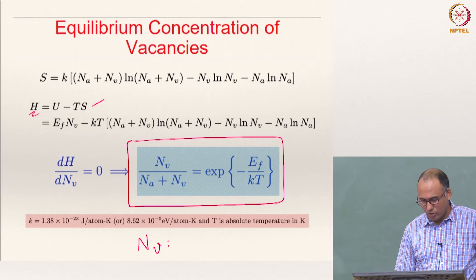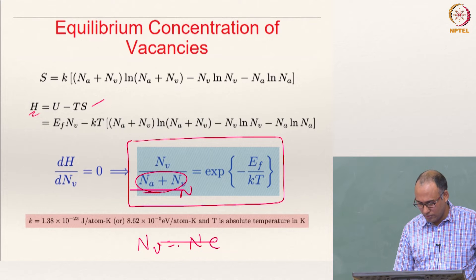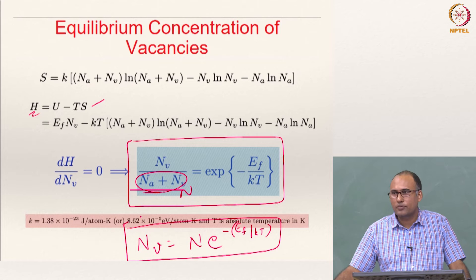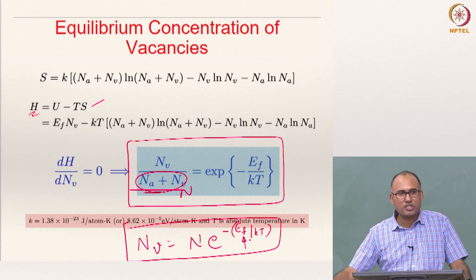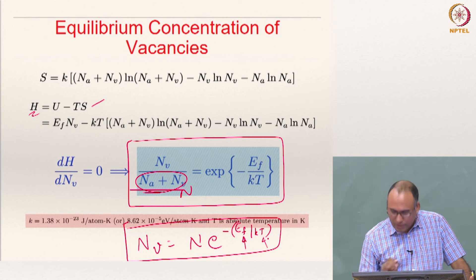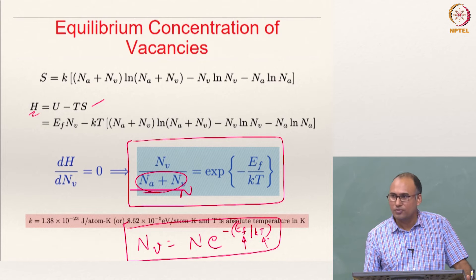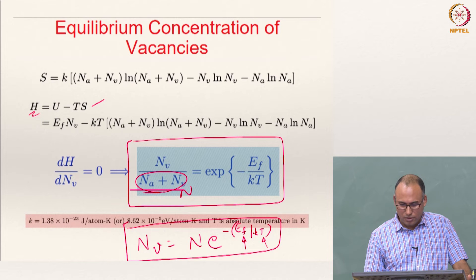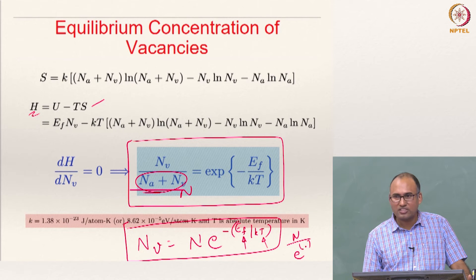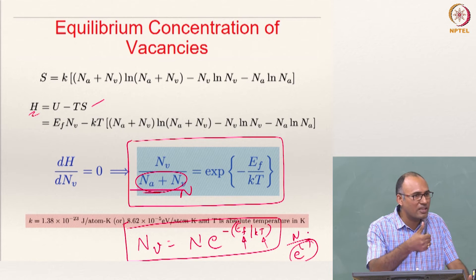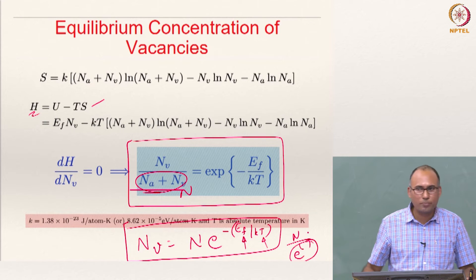Rearranging, and calling Na + Nv = N, we get Nv = N · exp(−Ef / KT). This gives the equilibrium concentration of vacancies in a material. If you know the vacancy formation energy, you can calculate how many vacancies exist at a given temperature. As temperature increases, the exponent becomes less negative, so Nv increases — vacancies can be created by thermal activation.